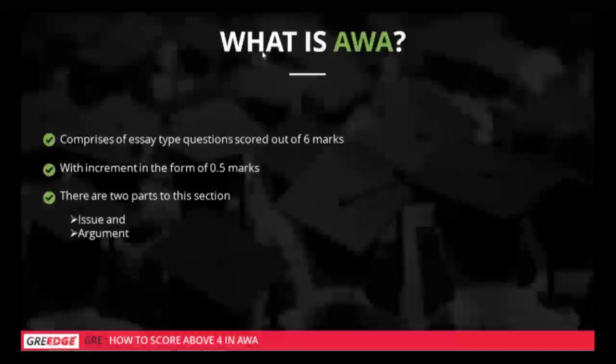The AWA comprises essay questions scored out of six marks. Both the issue and argument are out of six marks, and scores increase in increments of 0.5 — so you can score 0.5, 1, 1.5, 2, 2.5, and so on. Ideally, the minimum requirement for top 50 universities would be a score of 4.